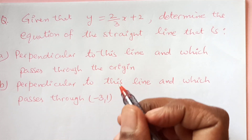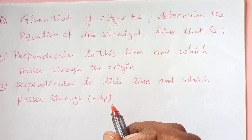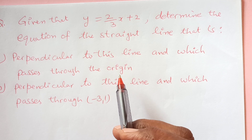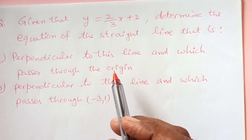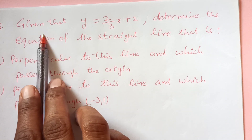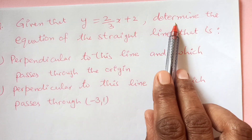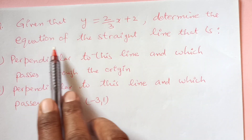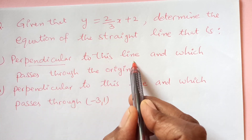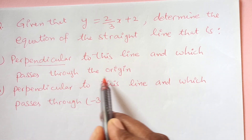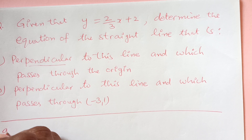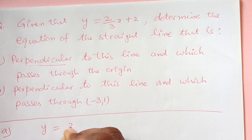Hello guys, welcome back to my channel. In this lesson we will do more examples based upon parallel and perpendicular lines. We have an example here: given that y equals this, determine the equation of the straight line that is perpendicular to this line and which passes through the origin. For part a, we are given the line y equals 2 over 3x plus 2.